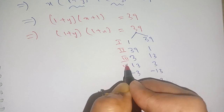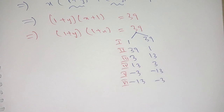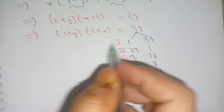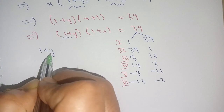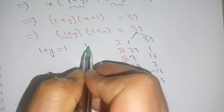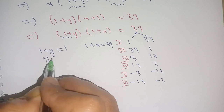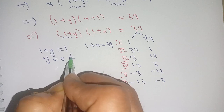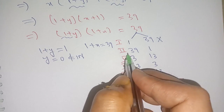For case 1, when the factors are 1 and 39: suppose 1 plus y is equal to 1, then y is equal to 0. But 0 does not belong to the natural numbers, so this case is rejected.